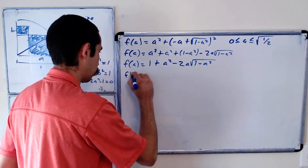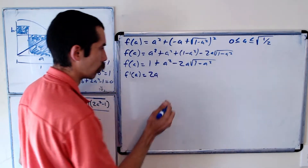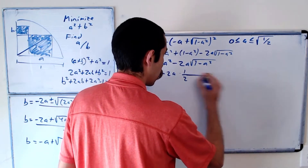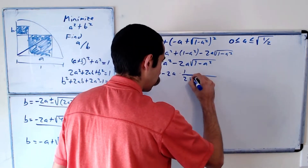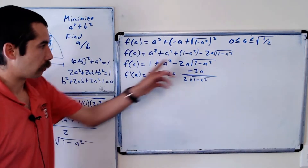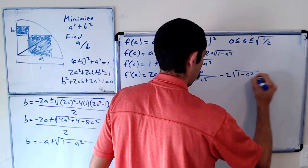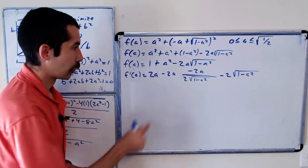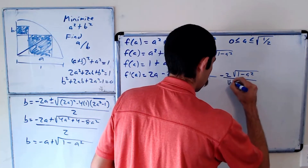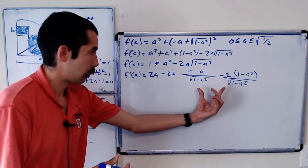Taking the derivative requires the product rule and chain rule. The derivative of 1 is 0, and the derivative of a² is 2a. For the product term −2a·√(1 − a²), we apply the product rule: −2a · (1/2)(1 − a²)^(−1/2) · (−2a) plus (−2) · √(1 − a²). Let's combine these with a common denominator.